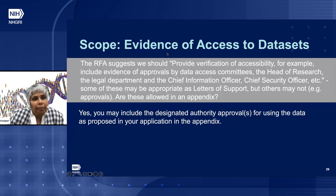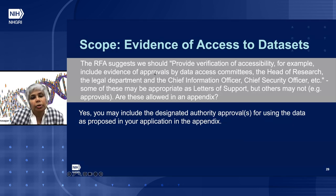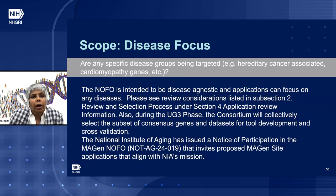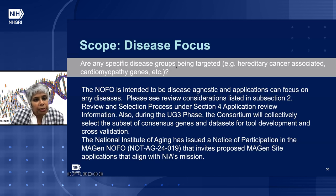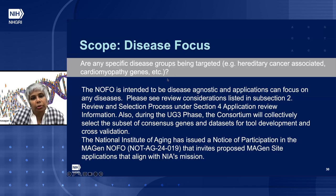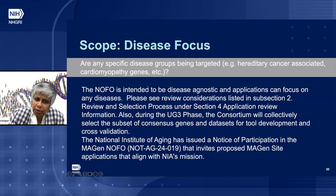Regarding evidence of access to data sets: the RFA suggests providing verification of accessibility such as approvals by data access committees. If some approvals are not in letters of support, can they be included in the appendix? Yes, you may include designated authority approvals for using the data in the appendix. Are any specific disease groups being targeted? This NOFO is intended to be disease-agnostic and applications can focus on any disease. Please see the review considerations listed in subsection 2 under section 4. During the UG3 phase, the consortium will collectively select a subset of consensus genes and data sets. The National Institute of Aging has issued a notice of participation to align with NIA's mission.